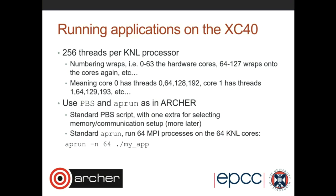The original Xeon Phi had quite a number of performance limitations that we've seen disappear. The original KNC was a coprocessor - you had to run a normal processor alongside it and transfer data backwards and forwards. With the KNL, you have access to main memory directly, so you don't have the burden of moving data to and from the coprocessor. The original KNC also required multiple threads on each physical core to get reasonable compute performance. That limitation is gone here.